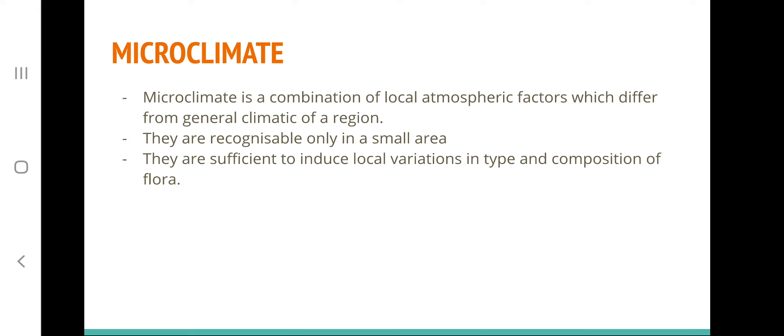Next is microclimate. Microclimate is a combination of local atmospheric factors which differ from the general climate of a region — it is the climate of a small region, recognized only in a very small area. It is an important factor sufficient to induce local variation in type and composition of flora, and this microclimate differs from the general climate of the surrounding region.